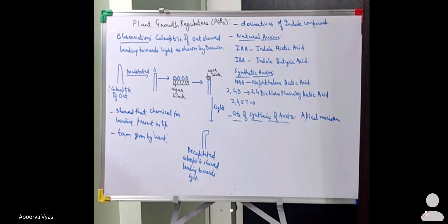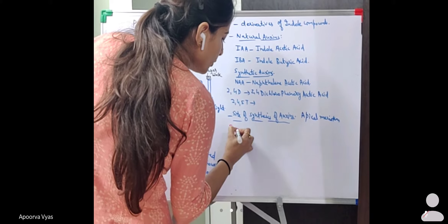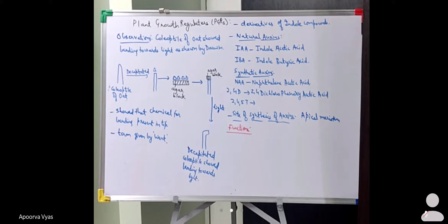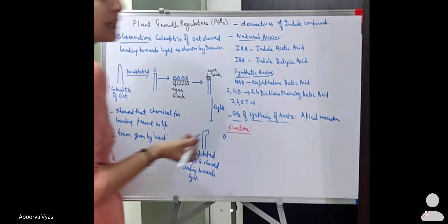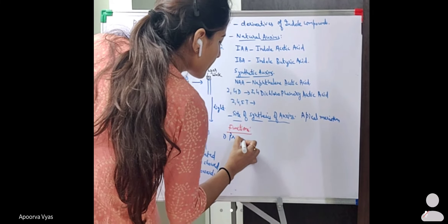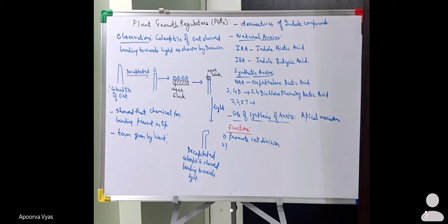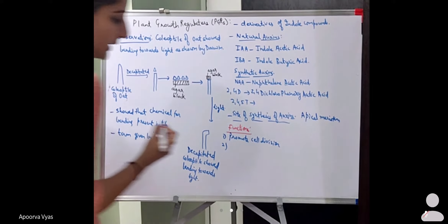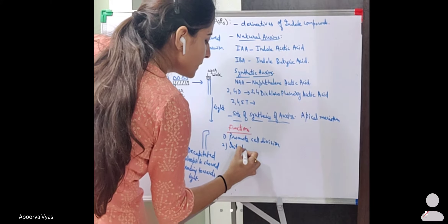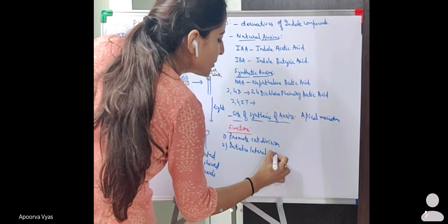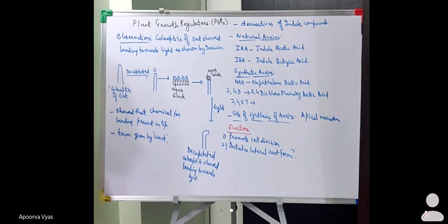The functions of auxins: first, it promotes cell division since it is present at the tip. Second, it initiates lateral root formation — meaning root branching, secondary roots, and tertiary roots are all formed because of auxins.